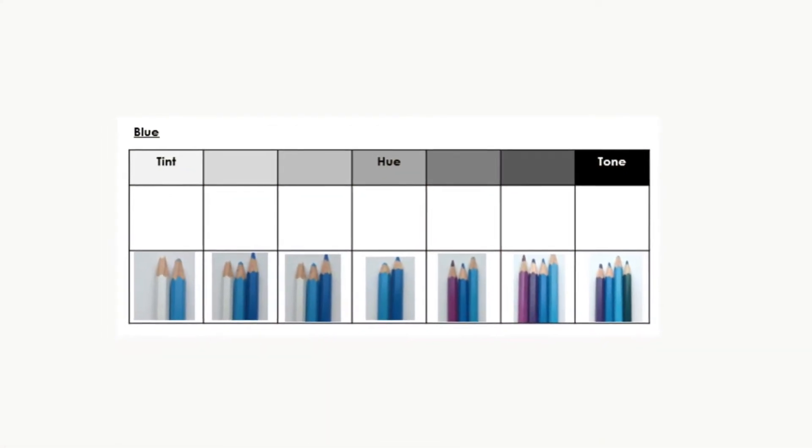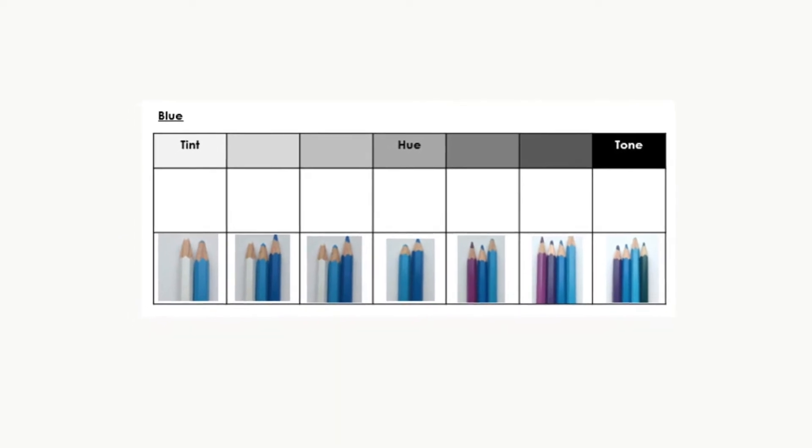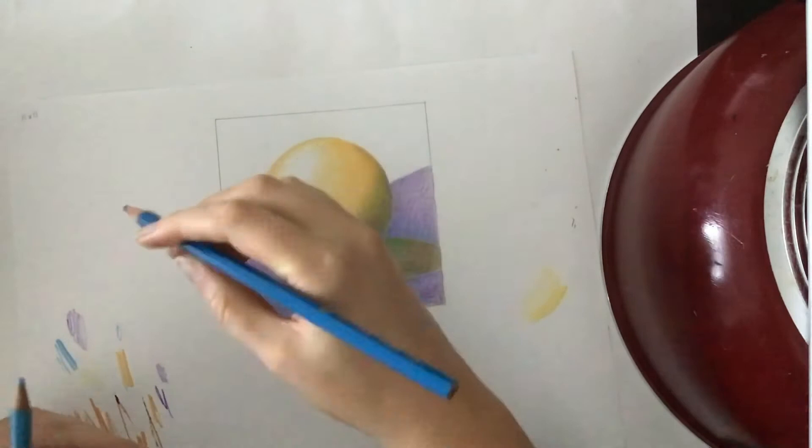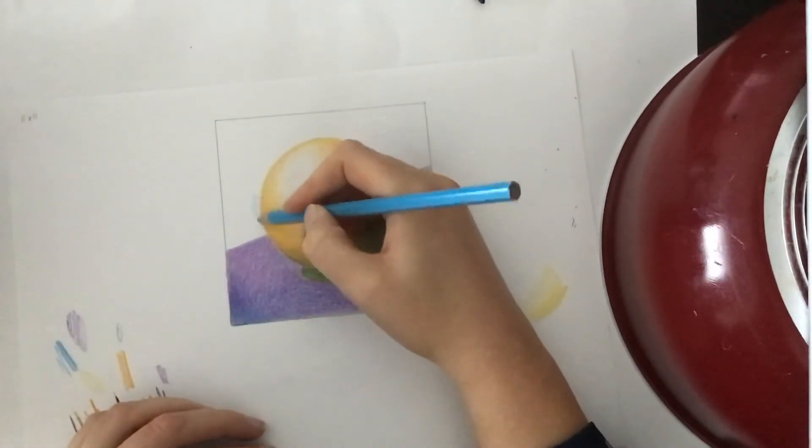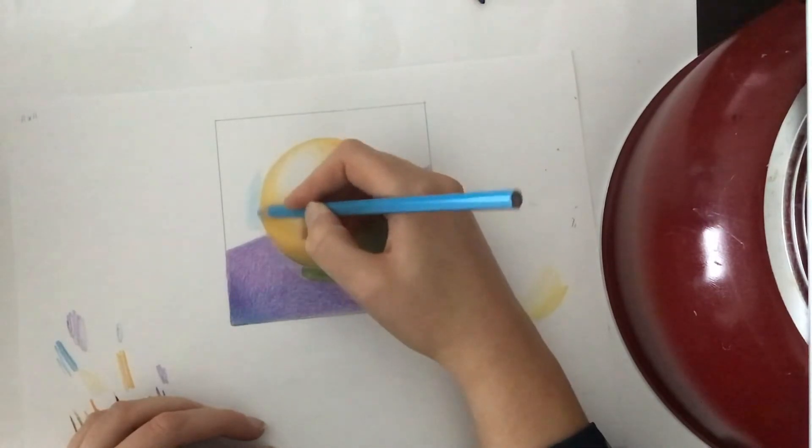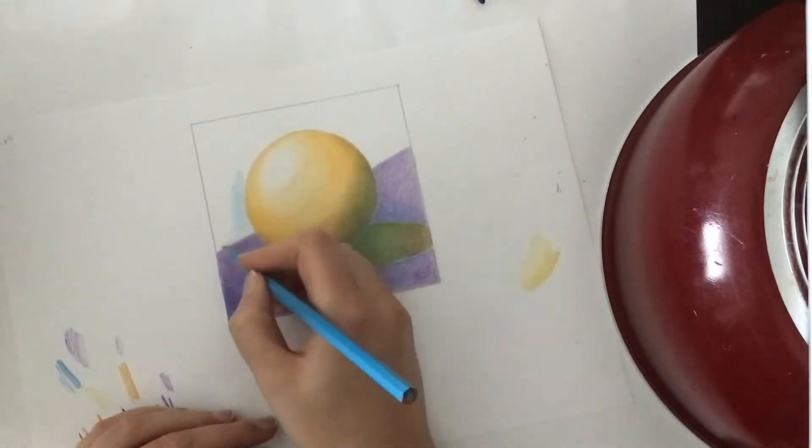Next is my background. I'm going to do it in a blue color. So I'm taking my blue tonal scale and I'm looking at all the different blues that I'm going to need. Starting with my hue colors and I'm going to blend in my hue colors all around the background of the sphere.